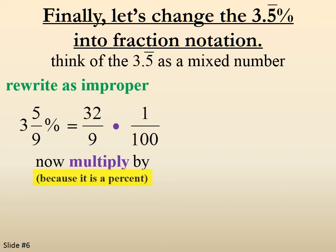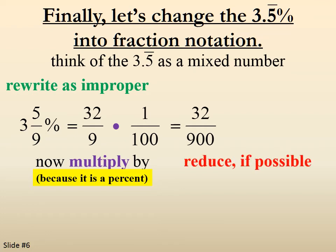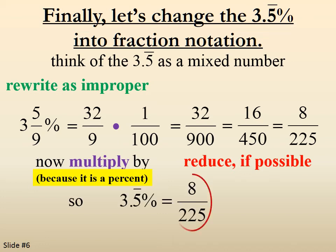Now we're going to multiply by the 1 over 100, because it was a percent. That gives us 32 over 900, and then we reduce all the way down to 8 over 225. So 3.5 repeating percent equals 8 over 225.